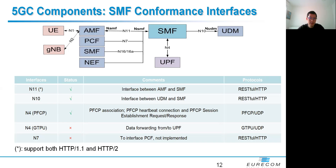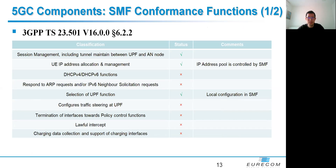For the SMF, it supports N11, N10, and N4 interfaces. It is important to note that N11 supports both HTTP version 1.1 and version 2, and we are working on the other interfaces to make them support version 2 as well. The list of SMF conformance functions according to 3GPP specifications can be found on the GitLab repository for SMF.